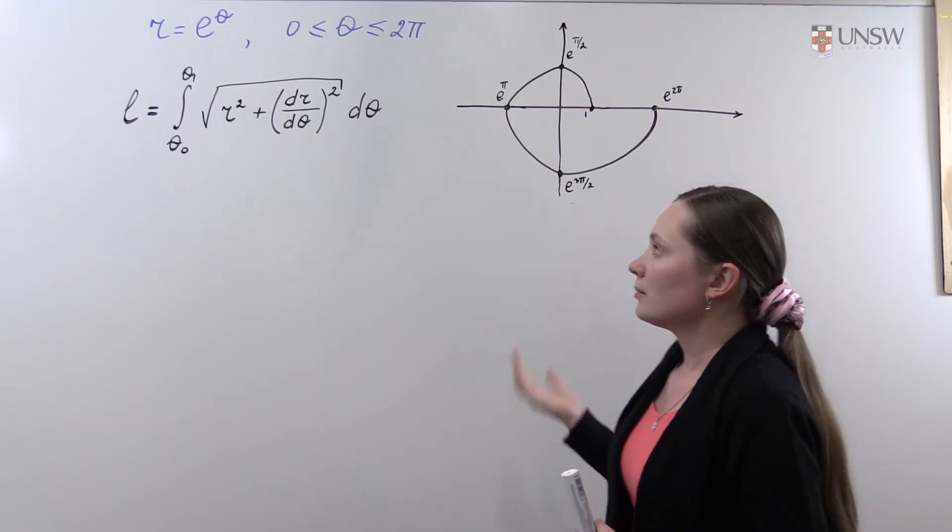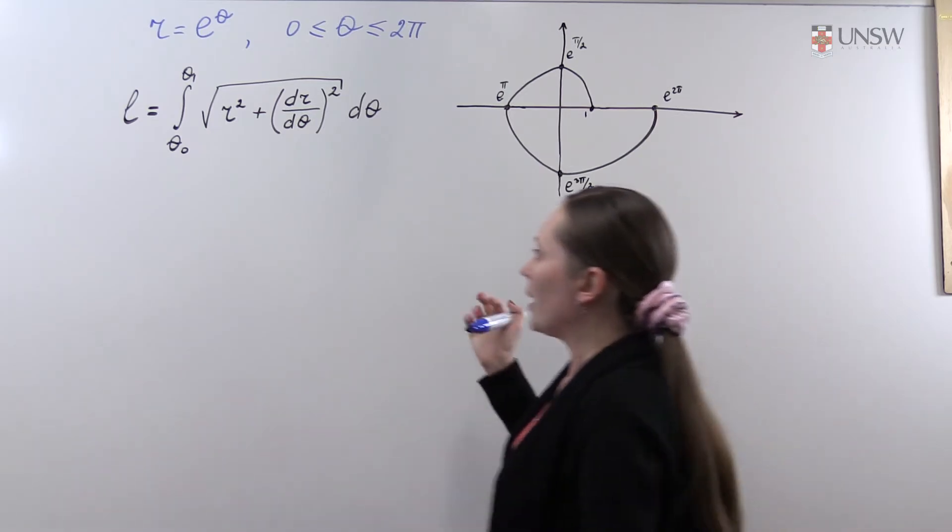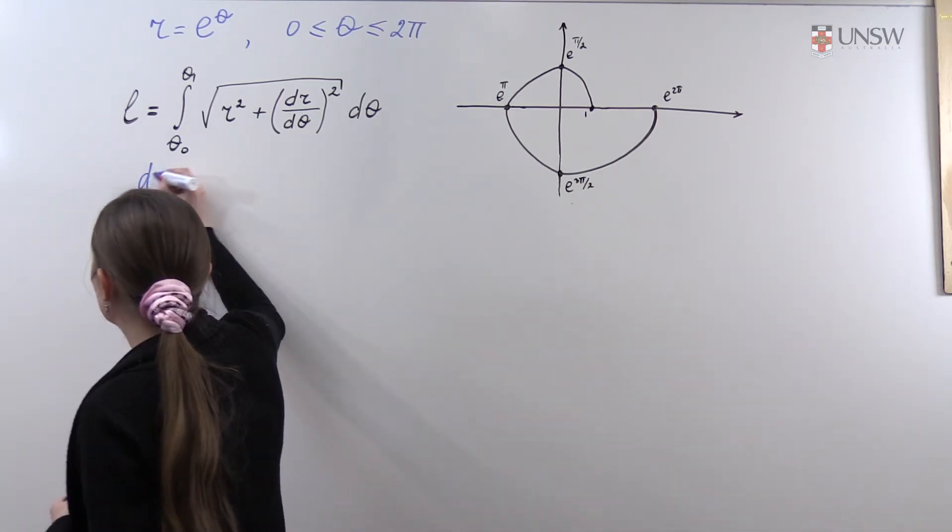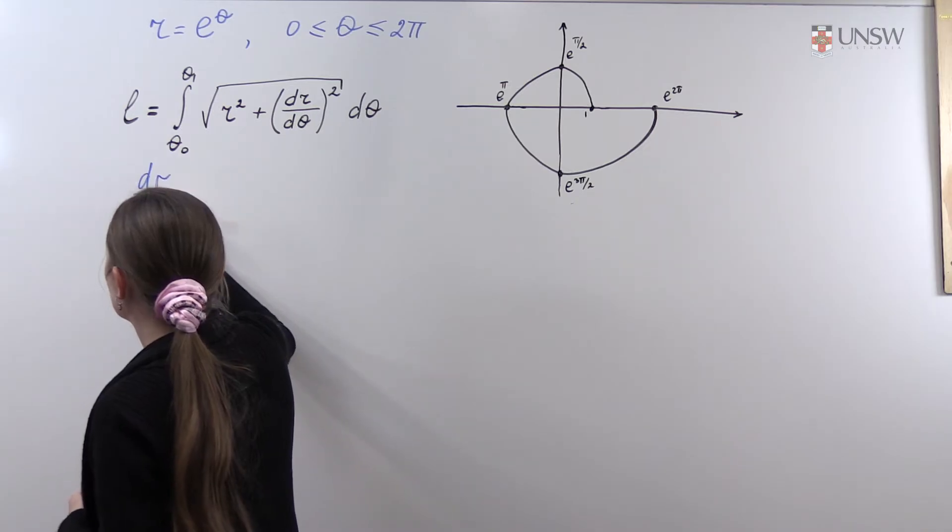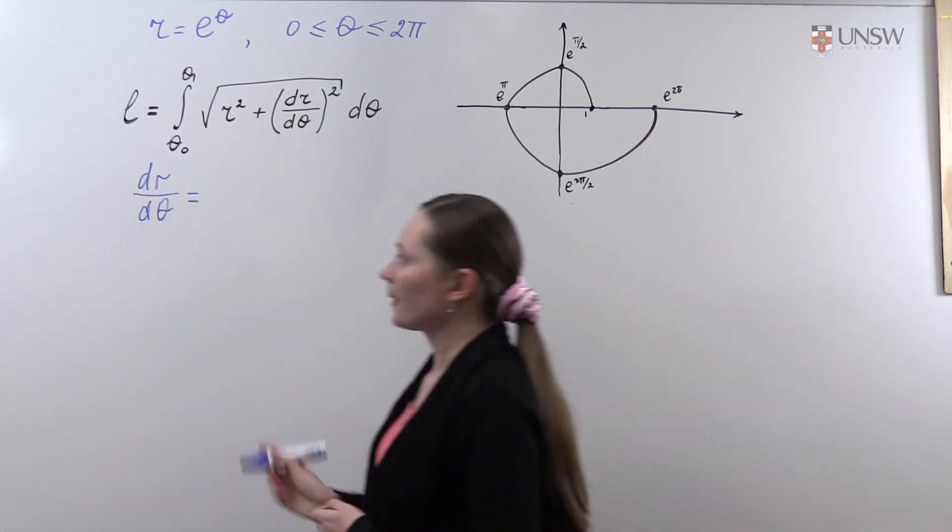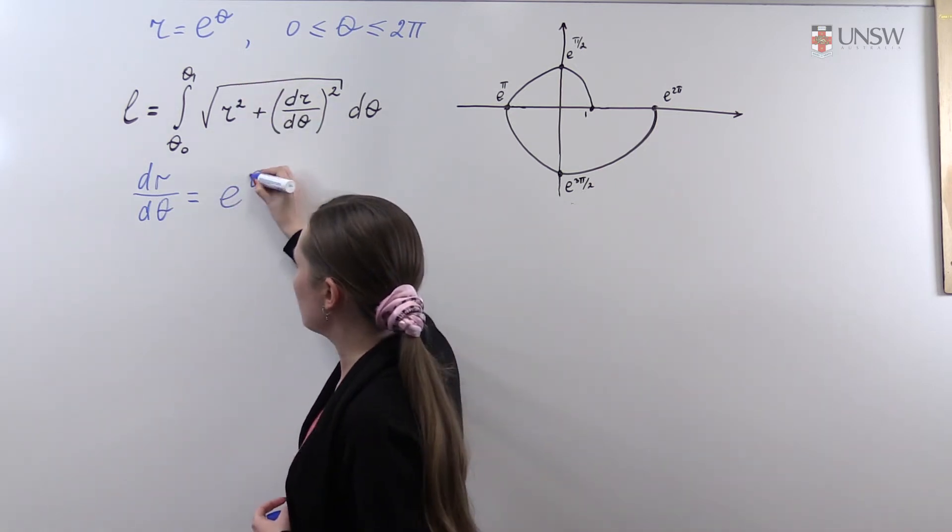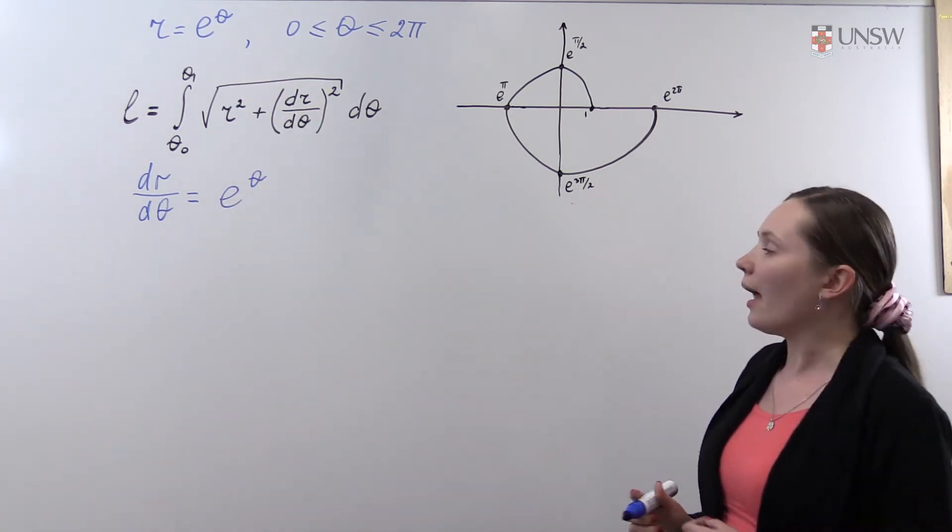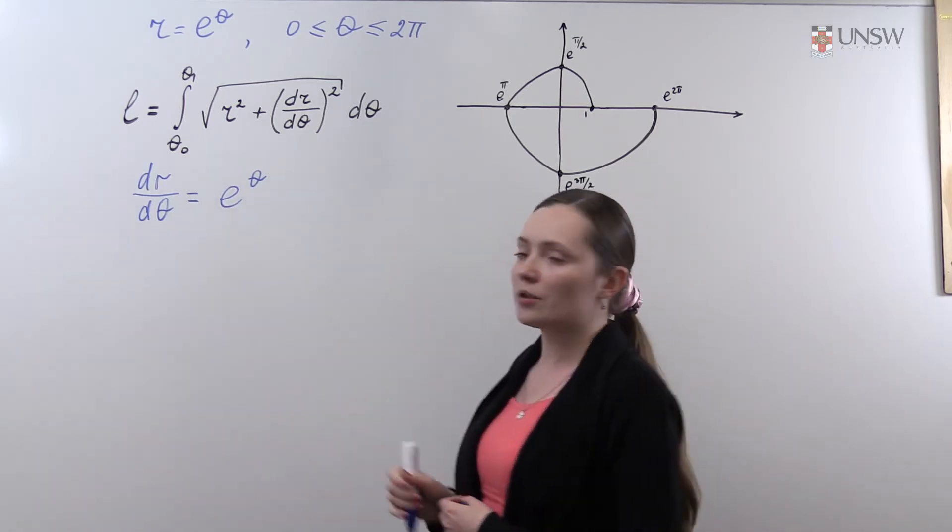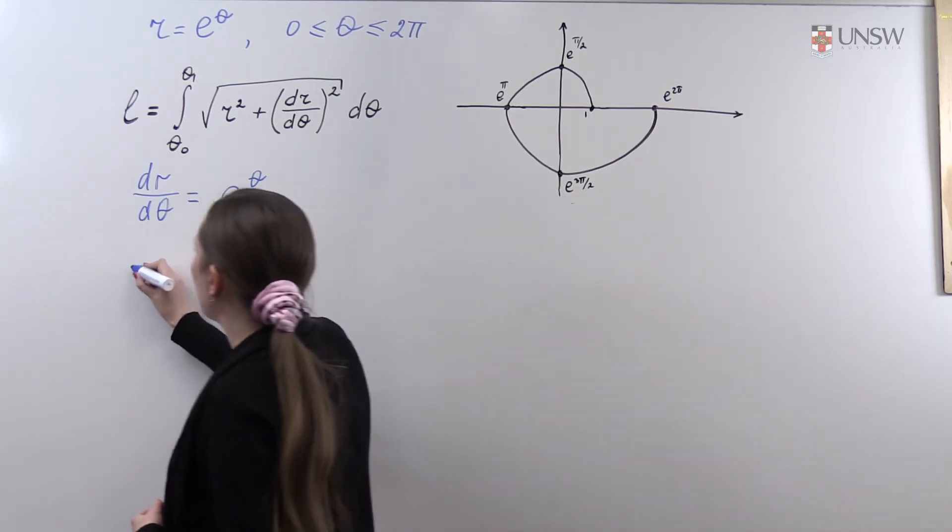In our case, we need to first find the derivative from the formula. It's e to the theta, and then we substitute this derivative into the formula to find the length.